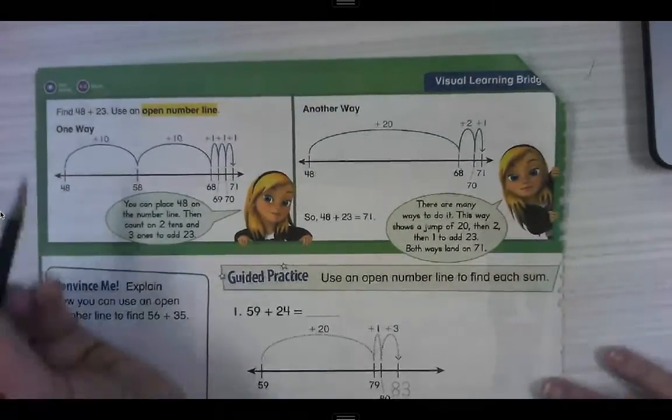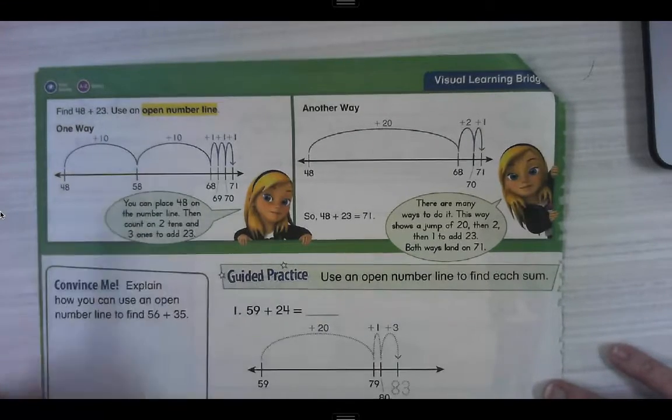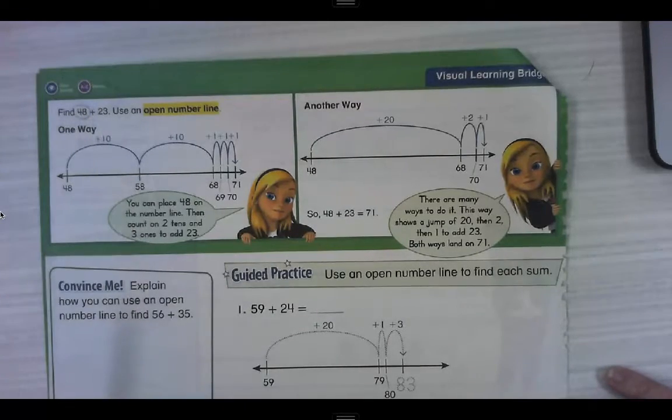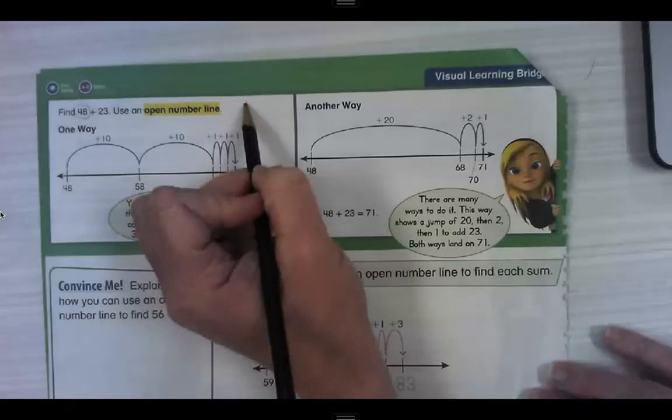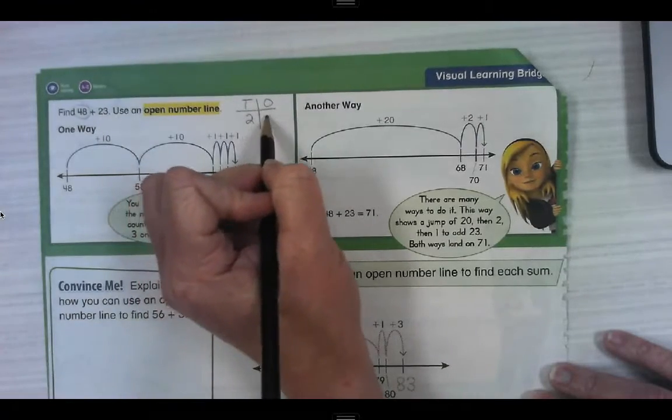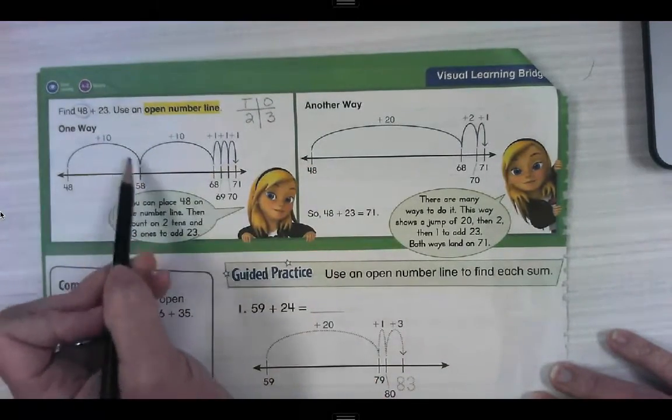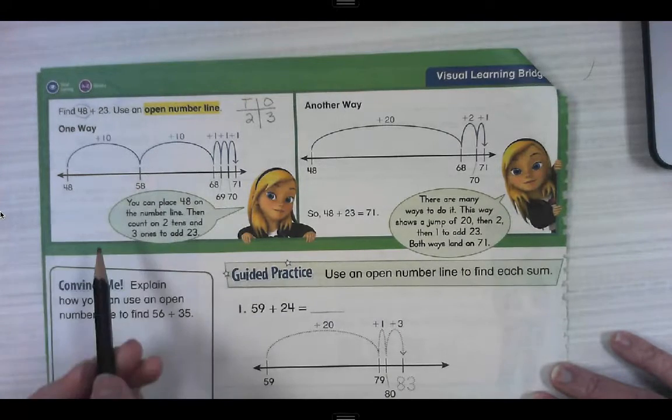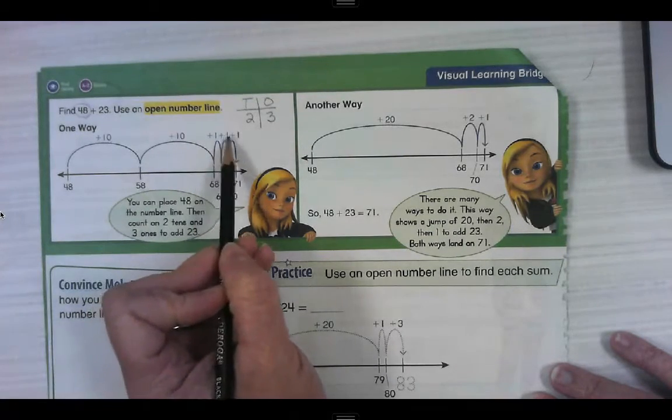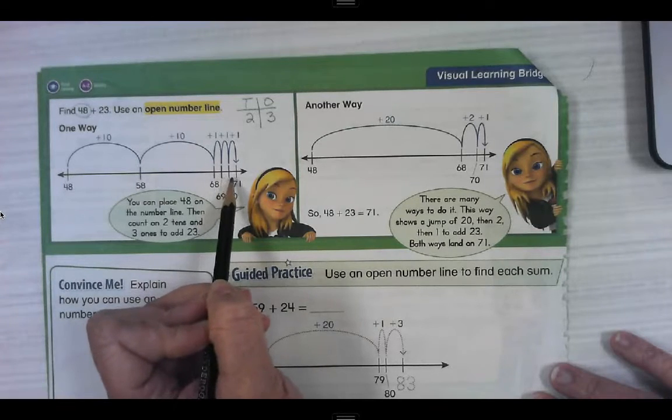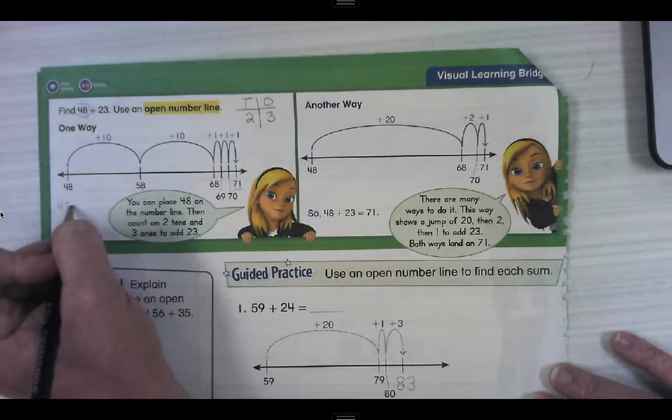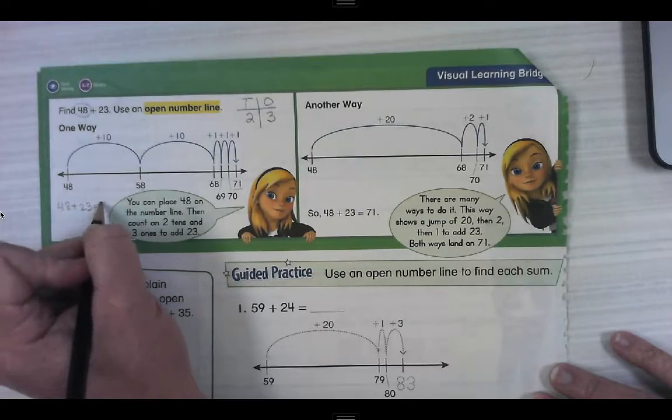All right. This one says find 48 plus 23 using an open number line. So they started with 48 over here on the left side because 48 is the greater addend. Then if we did a tens and ones chart, put in 23, two tens, three ones. They added 10, and then they added another 10. So go 48 to 58, 58 to 68. And then they added three ones. One, two, three. This was 69, 70, and 71. So the sum is 71. This equation is 48 plus 23 equals 71.